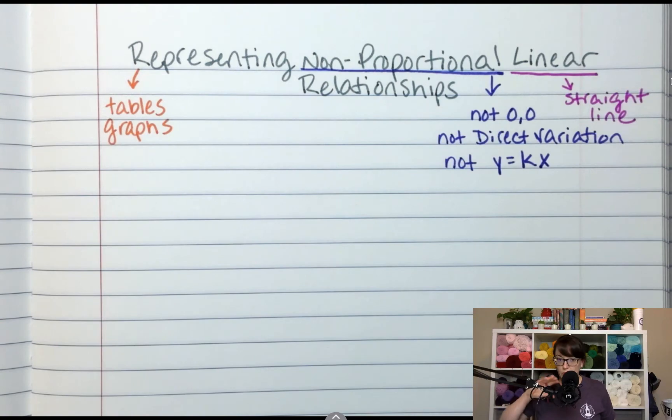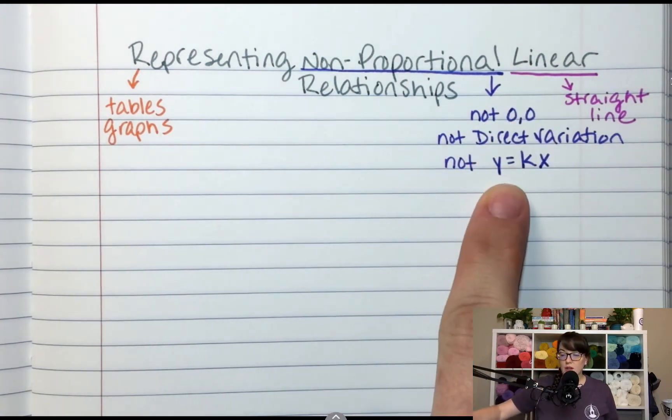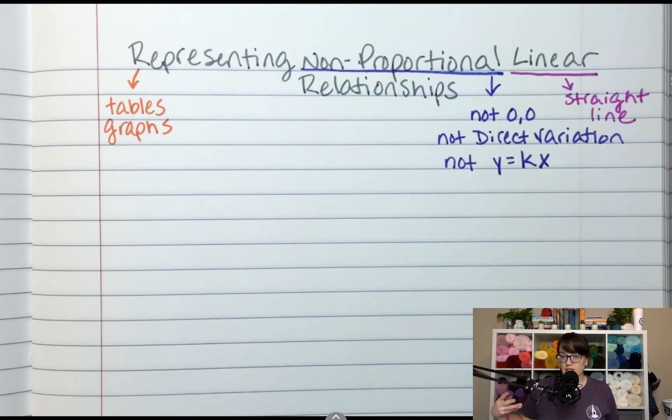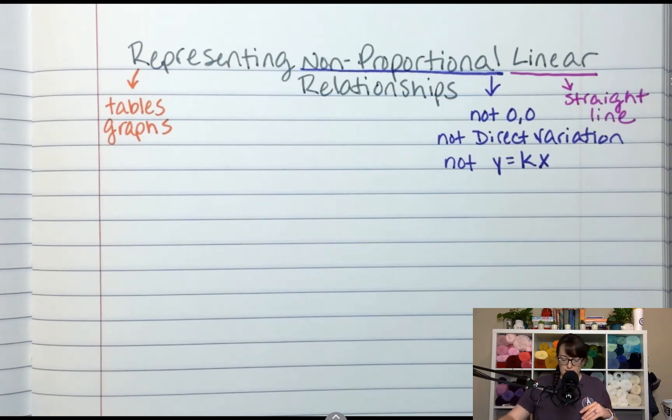All right, so we're going to be looking at tables and graphs of not one-step equations, not direct variations, but that are still a straight line. So what we're going to be seeing is straight lines that don't go through 0,0, but they go through the y axis somewhere. So let's start with an example.